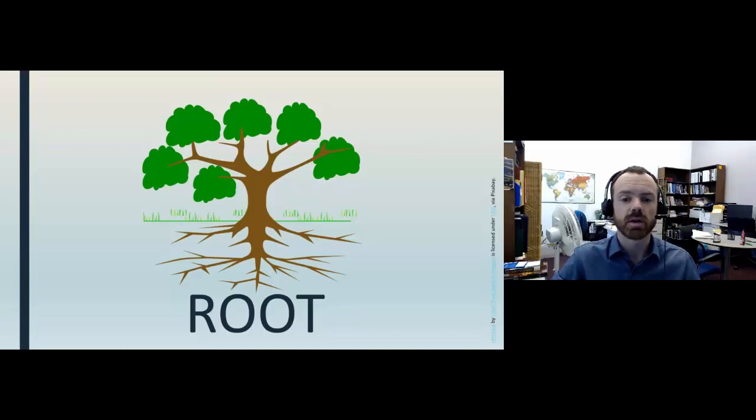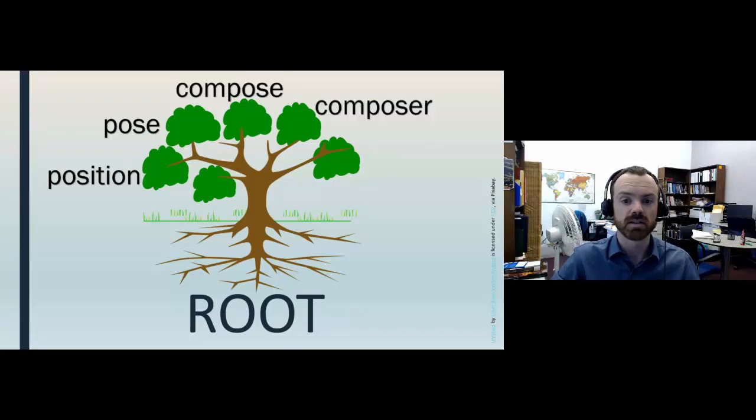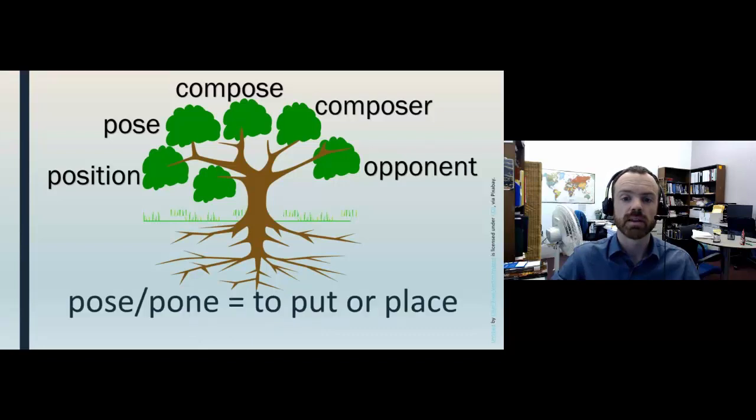When we talk about vocabulary, we can see that many different words share the same root. For example, let's think about words like position, pose, compose, composer, opponent. These words all share the root pose or pone, which both come from a Latin root word meaning to put or to place. So all of these words are related to putting or placing.